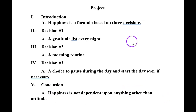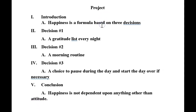Now, we know that when writing the essay, these will all be expanded upon. But this is the basic outline for the essay we're getting ready to write. So, what are the components of the essay? One: happiness is basically defined as attitude. It's a formula based on three decisions, and those three decisions are one, two, three. Now we're ready to write the thesis statement.